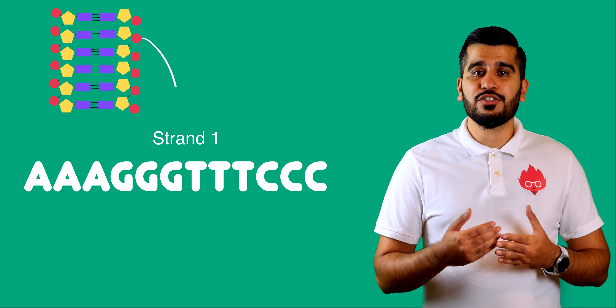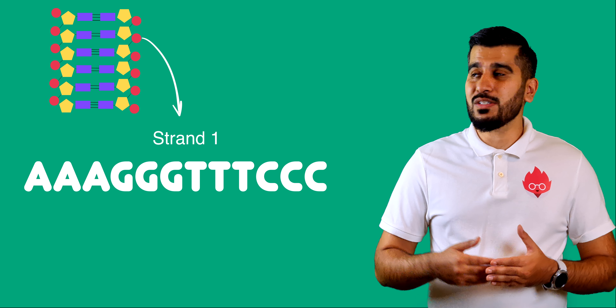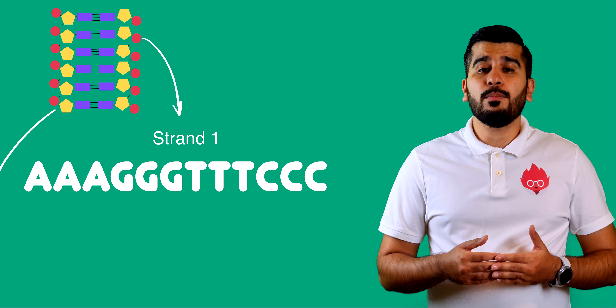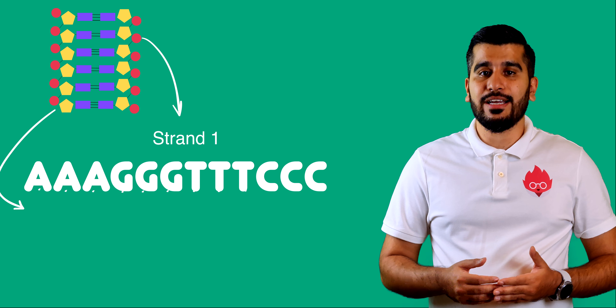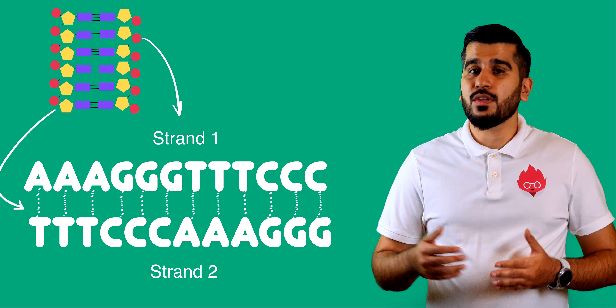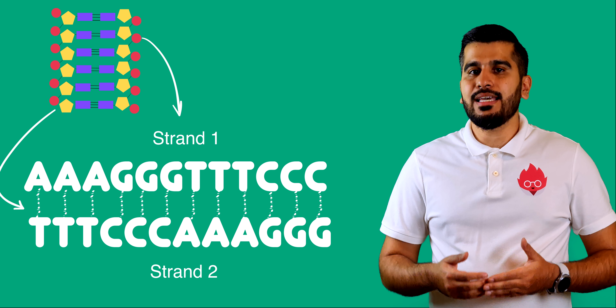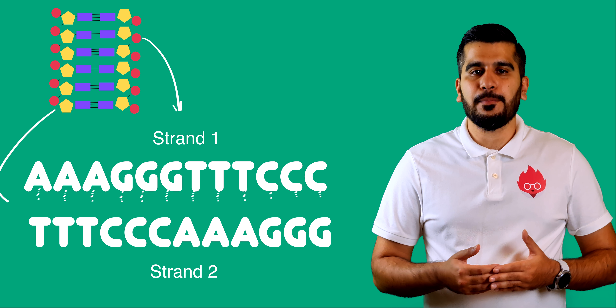If we have a strand of DNA that looks like this, then the complementary strand would look like this, where A binds with T and so on.